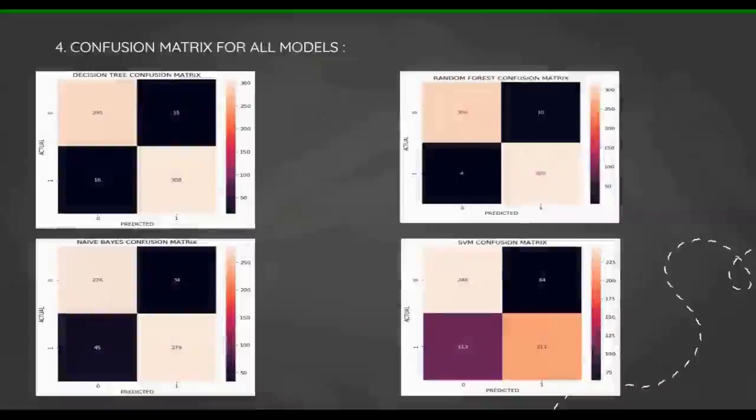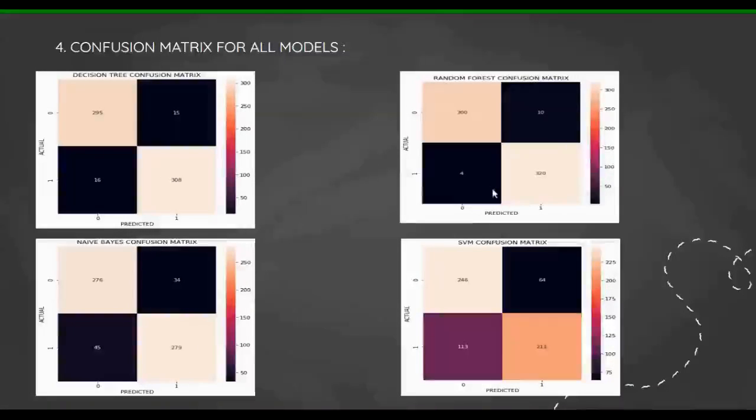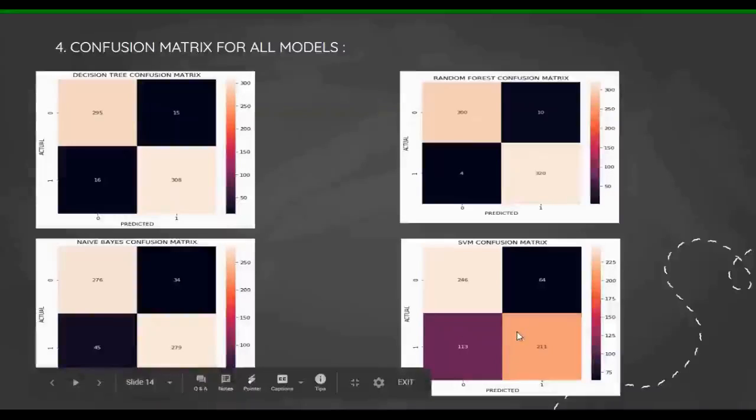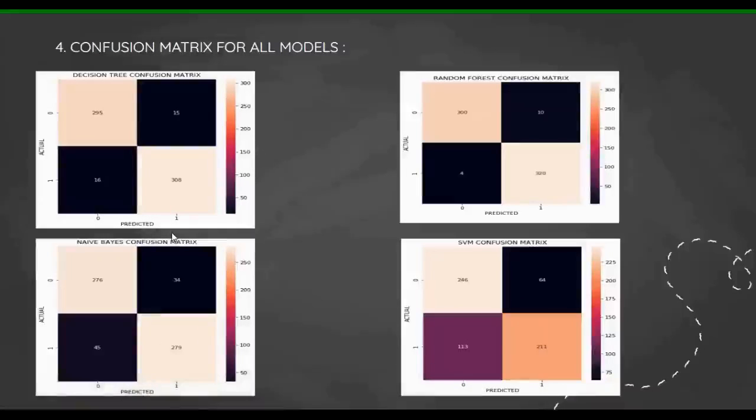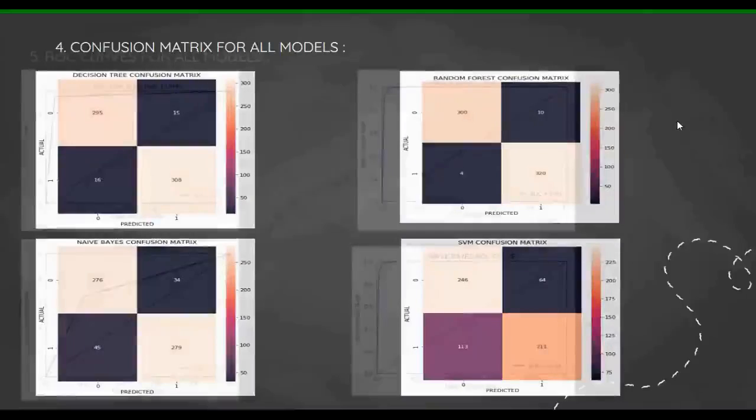Then the confusion matrix I've drawn for all the models. These are the confusion matrices. I've taken actual ones on the Y-axis and predicted values on the X-axis. This is true positive, this is false positive, this is false negative, and this is true negative. As you can see, random forest has the least number of false negatives and false positives. It's the best suited model over here. In SVM, the most number of false negatives and false positives, so it's behaving really badly in these type of problems. SVM, decision trees, and Naive Bayes are moderate in these cases. They are not that bad, they can be used, but the accuracy is not that good.